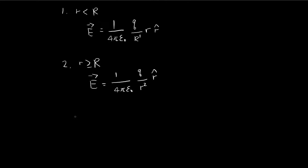We're being told to find the potential inside and outside of a uniformly charged sphere. The way to do that is to use this formula. The formula for potential at the point r, where r is a vector, is going to be the negative of the line integral of the electric field from some reference point all the way to the point we're evaluating.